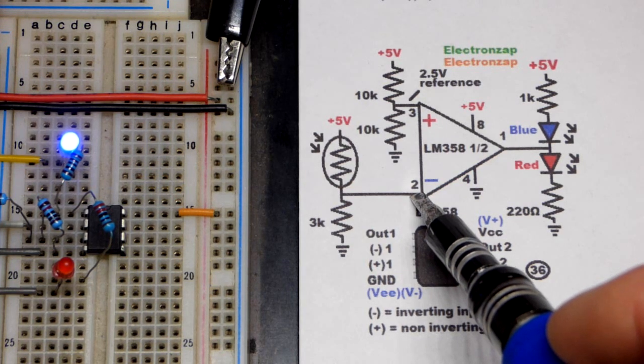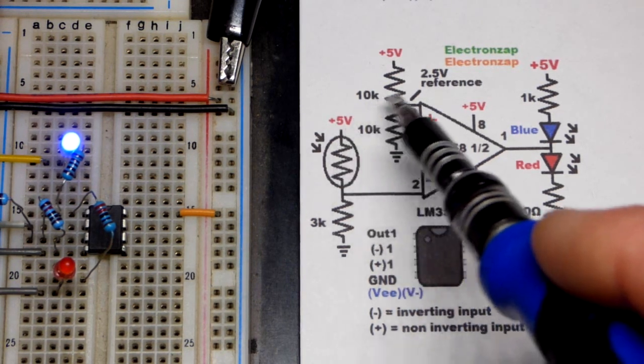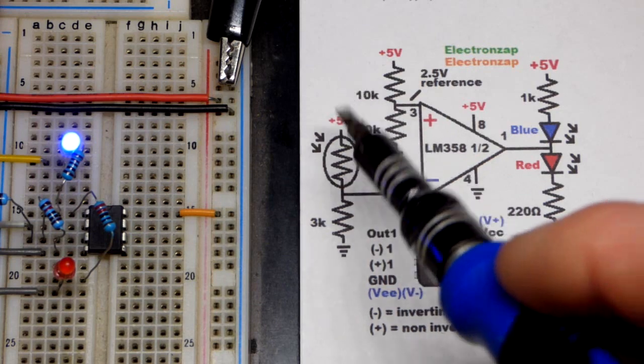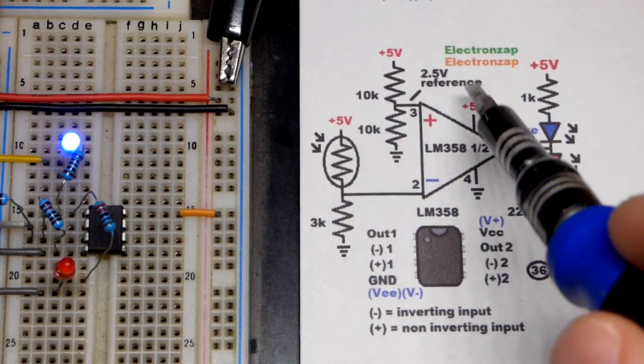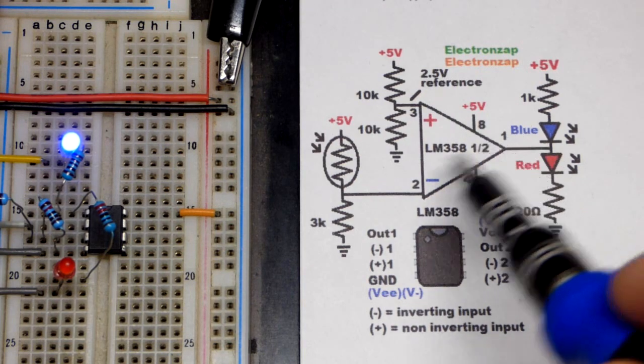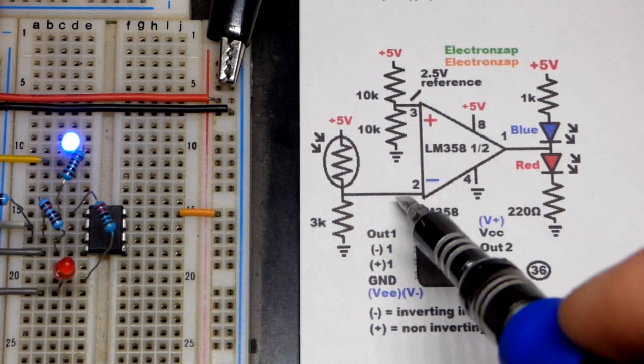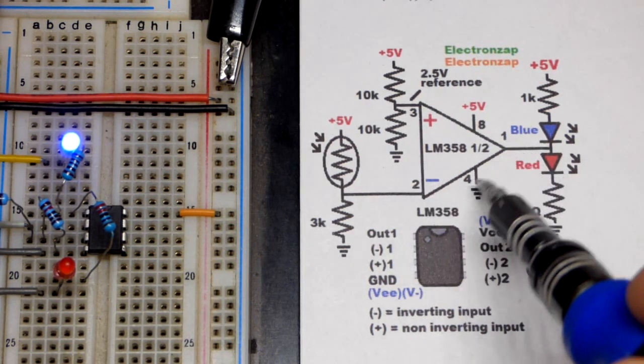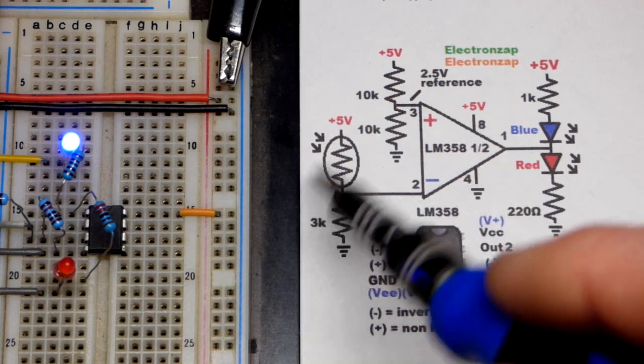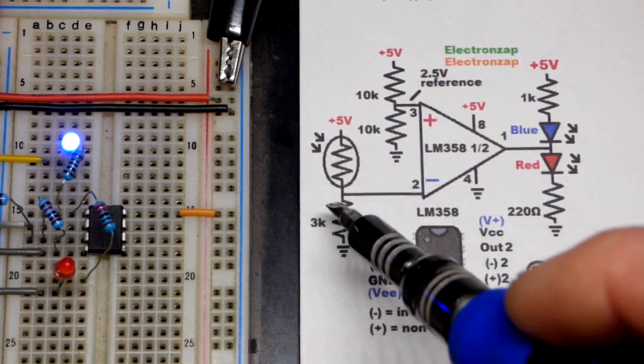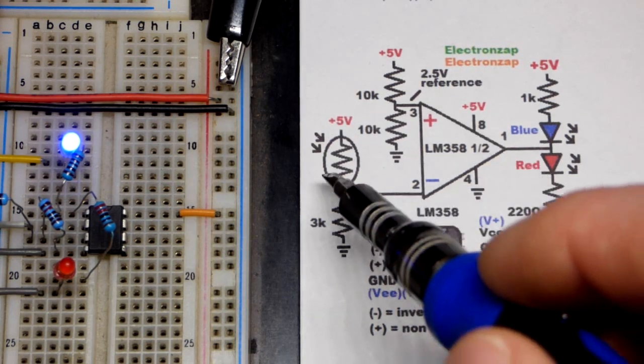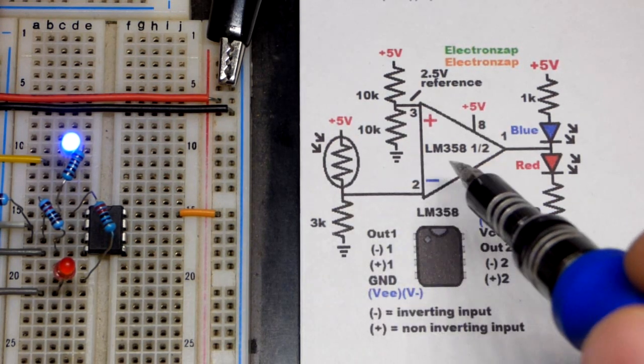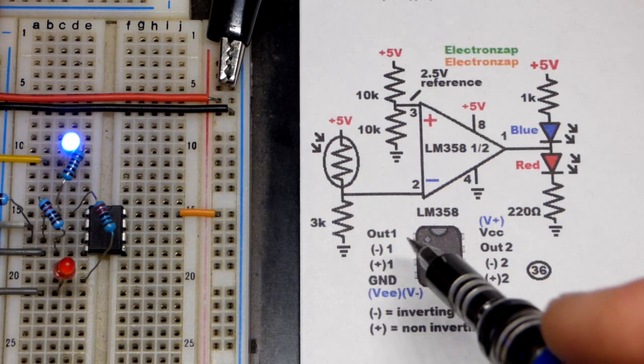We have our signal going to the inverting input. In recent videos our signal was going to the non-inverting input, so brighter light equaling a higher voltage meant there was a high output. Now we have the opposite - we shuffled these so that we would flip what happens to the output when we have the same change at the input. High in equals low out, and low in equals high out.